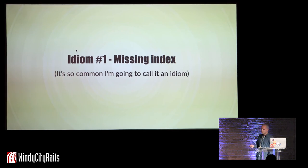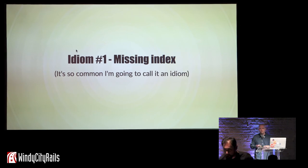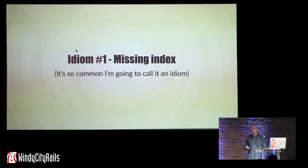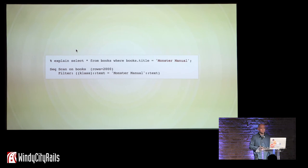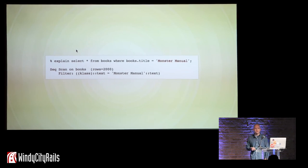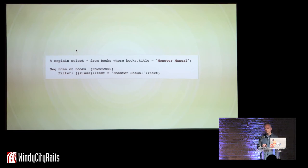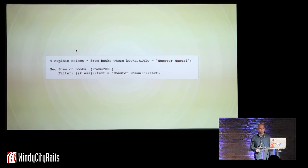Idiom number one — the missing index. This isn't really an idiom, it's more of a mistake, but it's so common I'm just going to call it one because we need to own our mistakes. Sometimes you create a database and you don't realize you're going to be performing lots of queries against a certain column, so you don't add an index. If you explain a query involving a lookup by a certain column — in this case we don't have an index on the title column — you get sequential scan with rows equal to 2,000, which is my entire data set. That's not good.